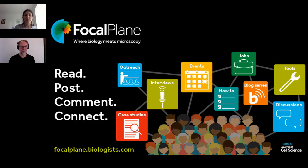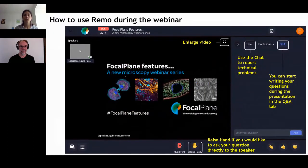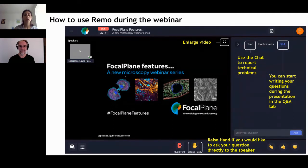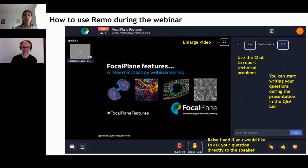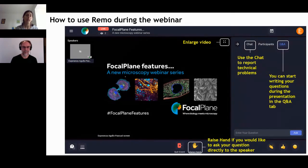Please join our community. Before I introduce today's speaker, a few comments on how to use Remo. During the speaker's presentation you can write your questions on the Q&A tab on the right-hand side of the screen. If you'd like to ask your question directly to the speaker, click the right-hand icon at the bottom of the screen, which will bring you on stage with your camera and microphone on.